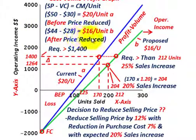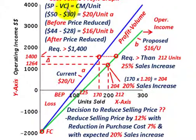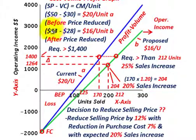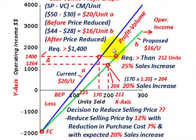Now let's look at after our price reductions. Our selling price is reduced from $50 down to $44 per unit — that's the 12% reduction. Our variable costs, those purchase costs, are reduced from $30 per unit down to $28 per unit. So after our price reductions, we come up with a contribution margin of $16 per unit: the $44 selling price minus the $28 variable cost equals $16 contribution per unit.